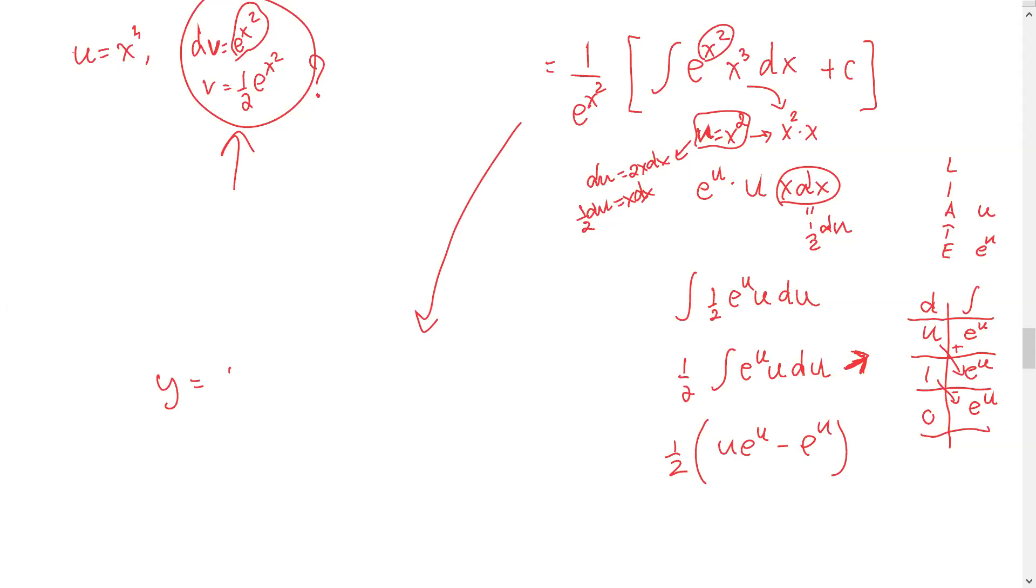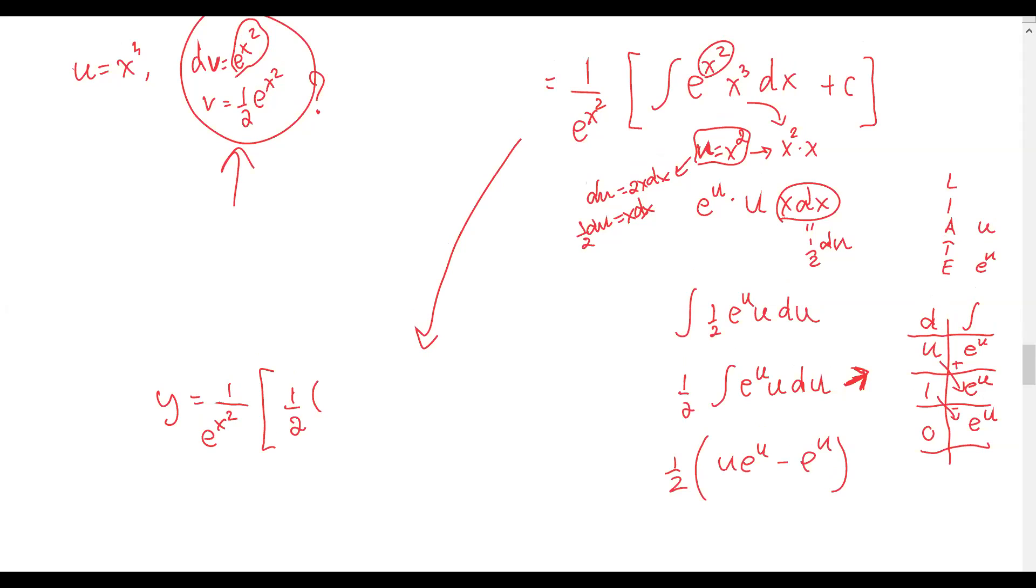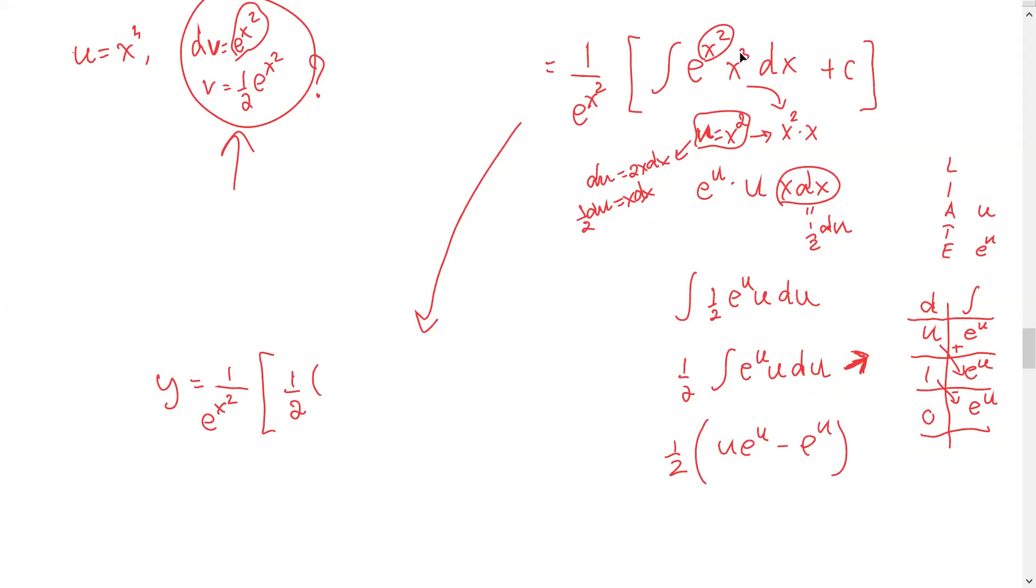So y equals one over e to the x squared, bracket, the integral now gives us one-half, the u is x squared, the e to the u is e to the x squared, minus e to the u or e to the x squared, and then plus C.